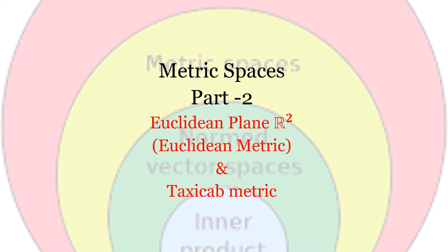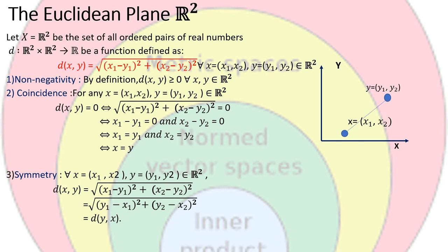The Euclidean plane R2: let X equals R2, the set of all ordered pairs of real numbers, and d be a function defined from R2 cross R2 to R, defined as d(x,y) equals the square root of (x1 minus y1) squared plus (x2 minus y2) squared, for all x equals (x1, x2) and y equals (y1, y2) in R2. The first property to check is non-negativity.